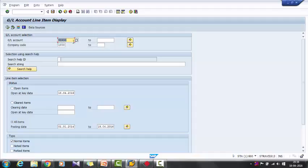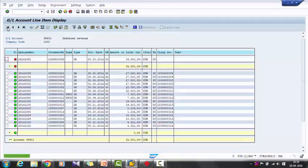In this, I am getting the GL line items for the GL account number 99900 for company code 1000 within the dates between 1-1-2014 to 18-4-2016. By executing this transaction, I have got 17 items here for the GL account.